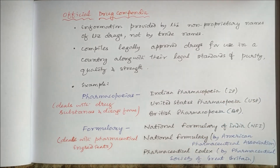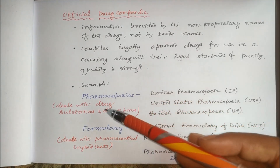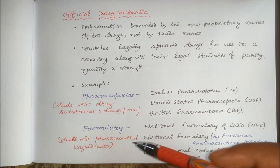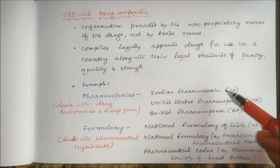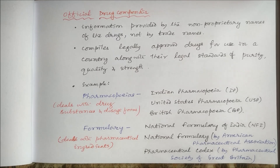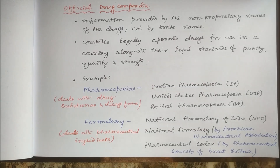Official drug compendia compile legally approved drugs along with their legal standards of purity, quality, and strength. Pharmacopoeias deal with drug substances and dosage forms, while formularies mainly deal with pharmaceutical ingredients — the committees making formularies typically consist of pharmacists. Examples include Indian Pharmacopoeia (IP), US Pharmacopoeia (USP), British Pharmacopoeia (BP), National Formulary of India (NFI), National Formulary by the American Pharmaceutical Association, and Pharmaceutical Codex by the Pharmaceutical Society of Great Britain.